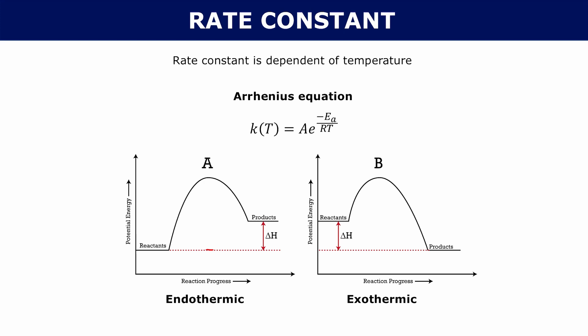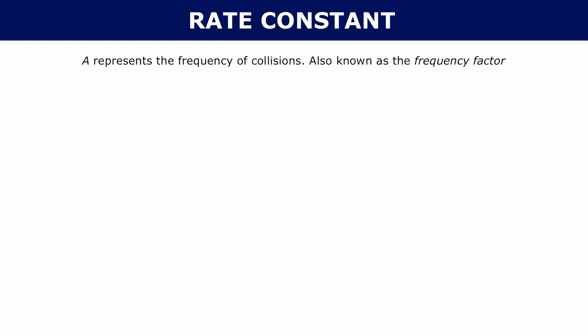A is known as your pre-exponential factor, and it represents the frequency of collisions — it's also known as the frequency factor. As the frequency of collisions goes up, your A goes up, which means your rate constant goes up.